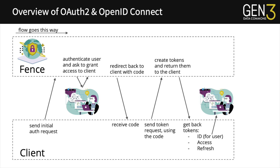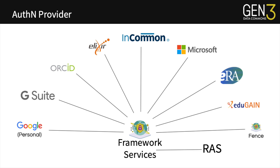Fence and the framework services in general are configurable as to what authentication provider or identity provider is actually used. You'll see a smattering of different options: Google, Microsoft, InCommon, eRA, and eventually RAS. For the CRDC, right now we have eRA or your NIH login. We're working on adding RAS as the new identity provider within the framework services.